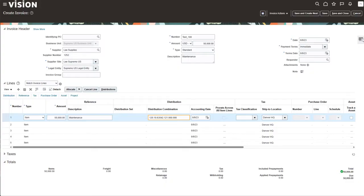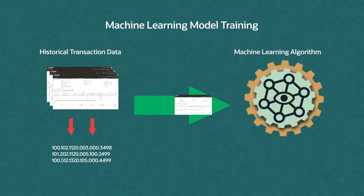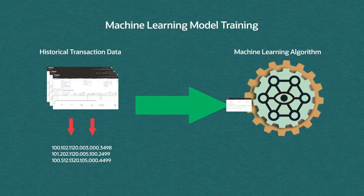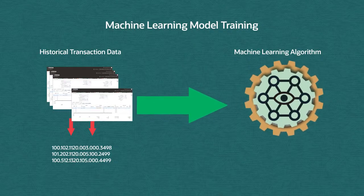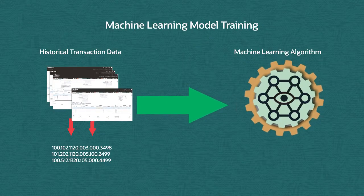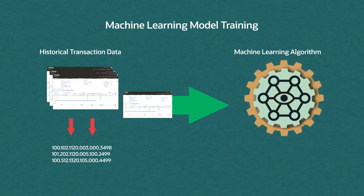It turns out this is a very good process to involve artificial intelligence and machine learning. Let's talk about how the machine learning works. We start with historical data, which is used to train the machine learning algorithms. We typically use about 18 months of historical data, if it's available. During training, the algorithms see how previous invoices had been processed with code combinations in the past.